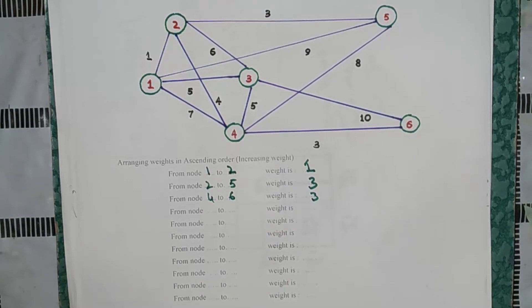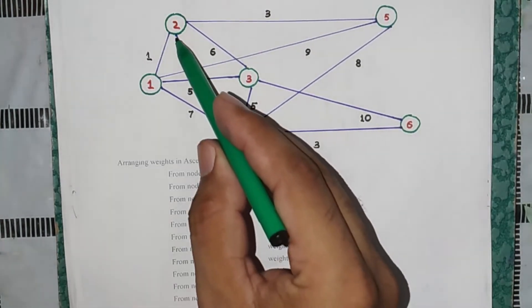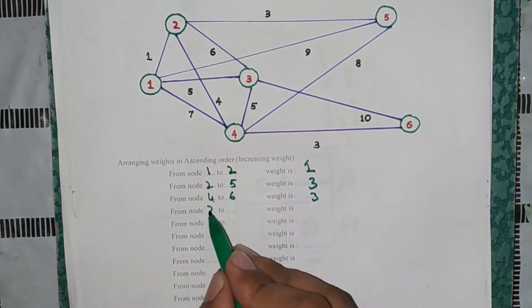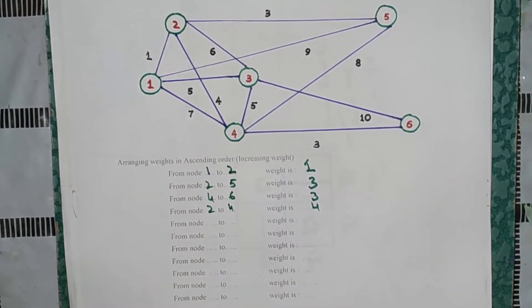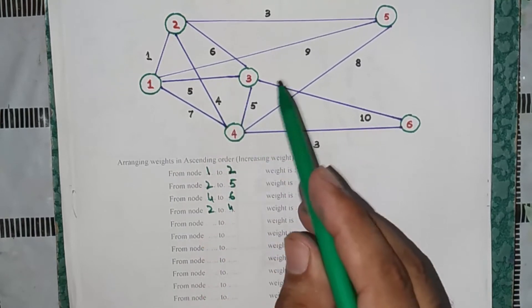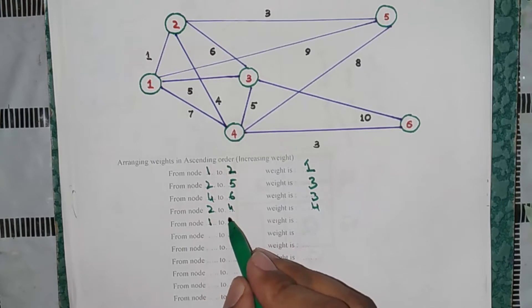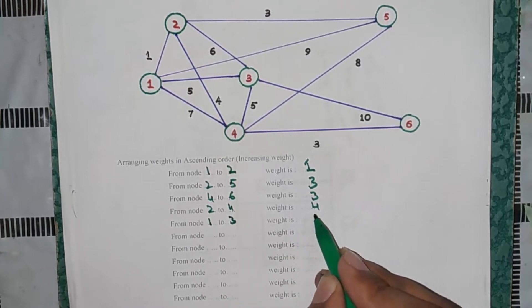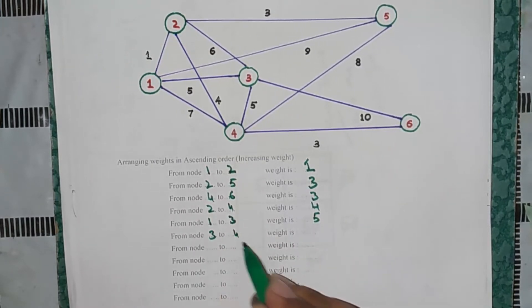After 3, the next larger weight is 4, and we have 2 to 4 for weight 4. After 4, the next larger number is 5, and it also appears in more than one position — one is 1 to 3 and one is 3 to 4. So we write: 1 to 3 with weight 5, and 3 to 4 also with weight 5.